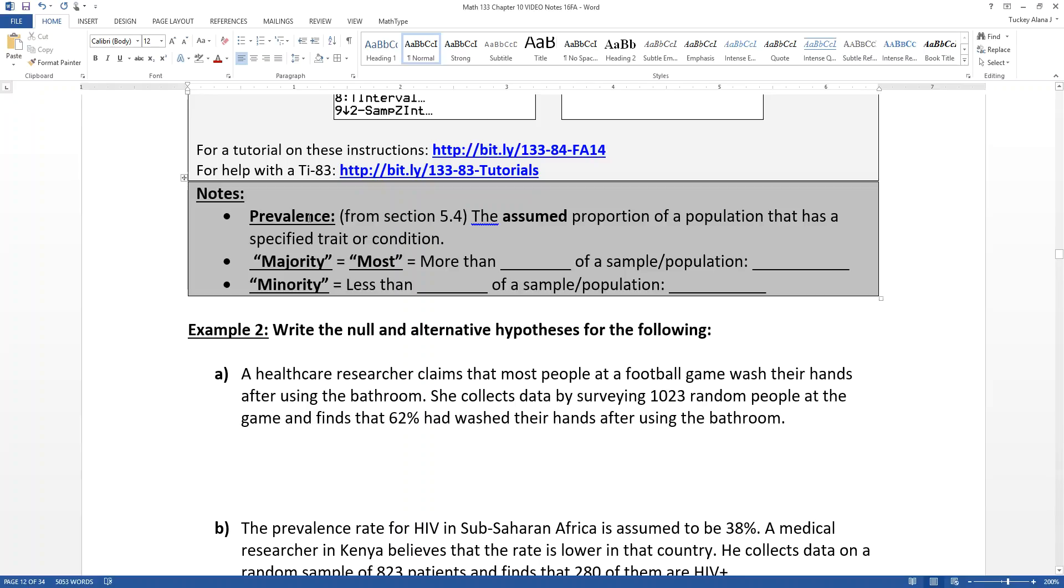Prevalence, we learned in section 5.4, is the assumed proportion of a population that has a specific trait or condition. So diabetes has a prevalence rate of 33% in the US. That means the assumed proportion of people that are diabetic in the US is 33%. So that word prevalence is giving you a proportion.